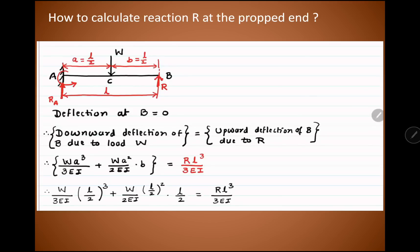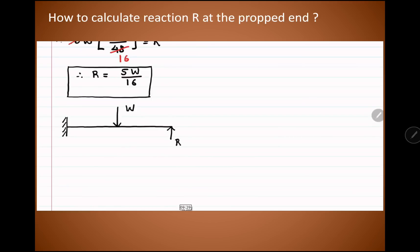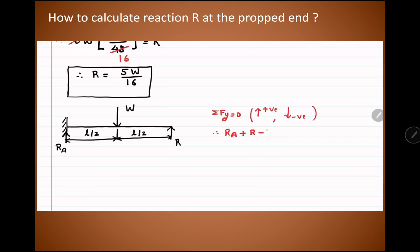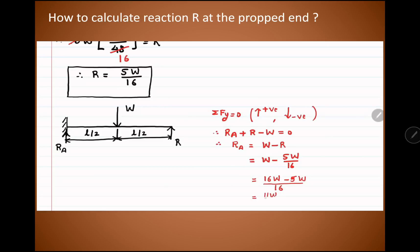Now we find reaction Ra at the fixed end. Applying equilibrium — summation of forces in the y-direction equals zero, with upward forces positive and downward negative — we get: Ra + R − W = 0, so Ra = W − R = 16W/16 − 5W/16 = 11W/16.